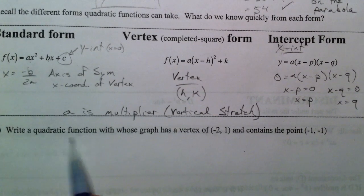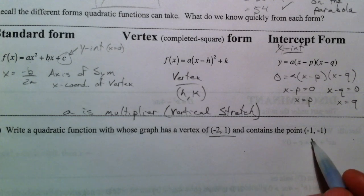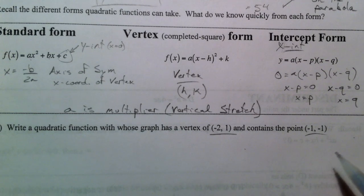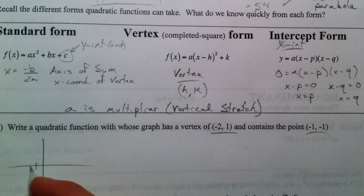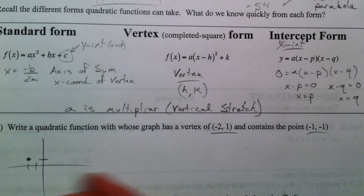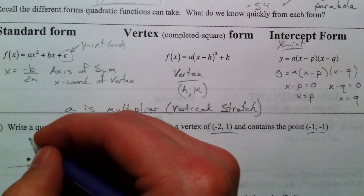So write a quadratic function whose graph has a vertex of negative 2, 1, and a point negative 1, negative 1. So what I like to do first is I like to start with a picture. We're starting at negative 2, 1, and so I know that's my vertex.